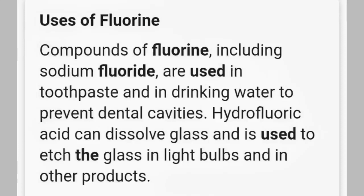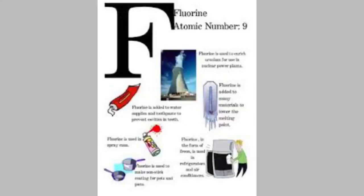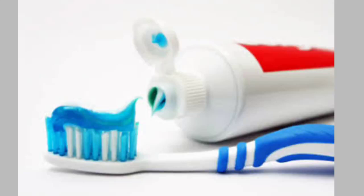The second most important chemical is fluorine. Fluorine is most important with respect to toothpaste and drinking water. It is used as a refrigerant or coolant in the form of fluorine gas, and also in etching glass and light bulbs. Fluorine compounds such as stannous fluoride and sodium fluoride are used in various applications. These are all very important chemicals in our daily life.